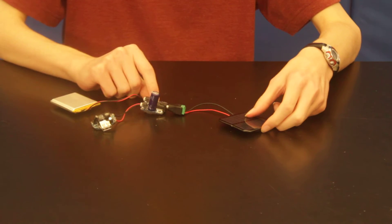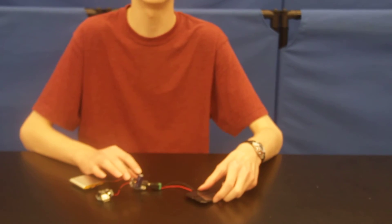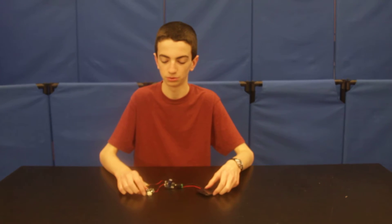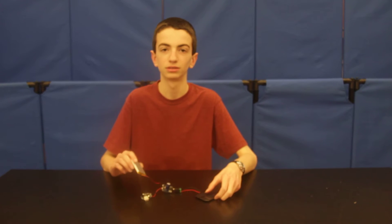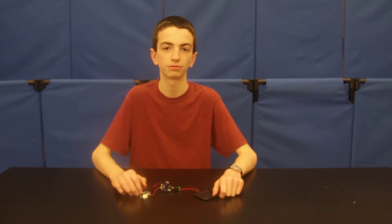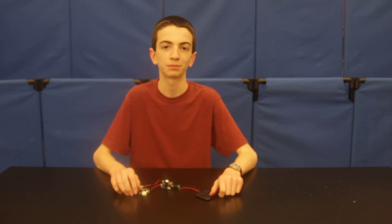It is directly sent to the charger, which contains a capacitor to maintain a constant flow of electricity. Then the current flows into the boost converter, which increases the voltage from 3.7 volts given off by the battery to 5 volts to ensure there's enough power to charge the phone. From this USB port attached to the boost converter, I can plug my charger in and my phone will charge.